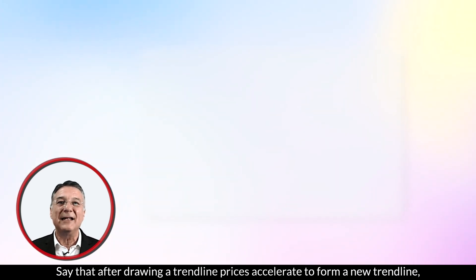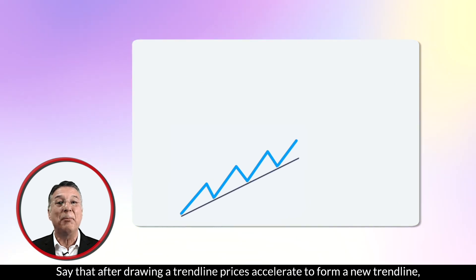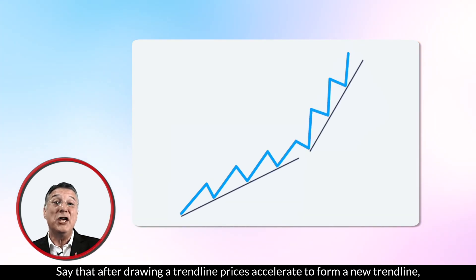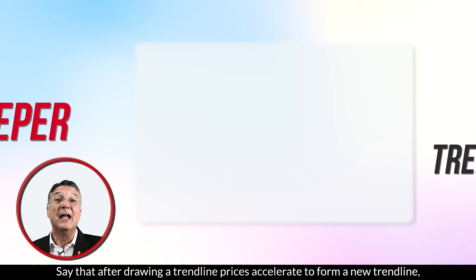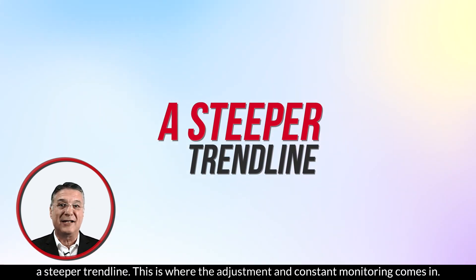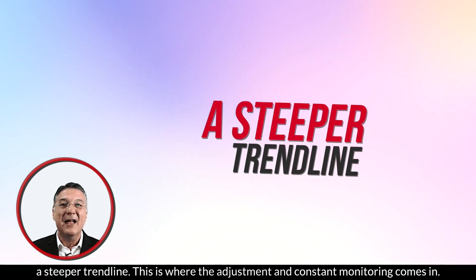Say that after drawing a trend line, prices accelerate to form a new trend line — a steeper trend line. This is where the adjustment and constant monitoring comes in.